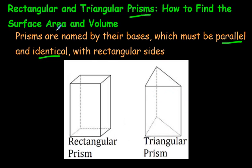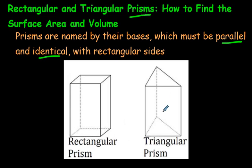Surface area is — if we were to paint the surface of the outside, the total amount of paint we need, how much area we painted — that would be our surface area. Volume is if we were to fill these things up with water. How much water would fit inside there would be our volume.